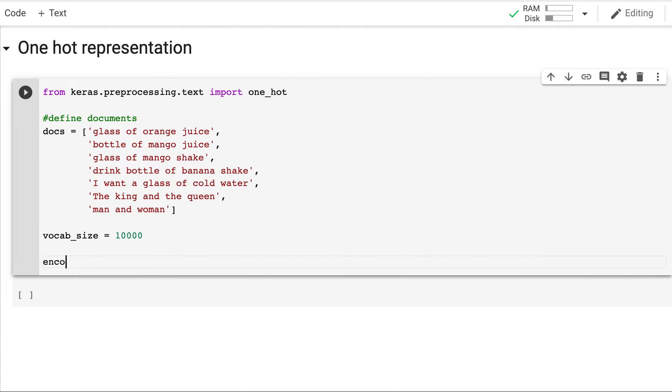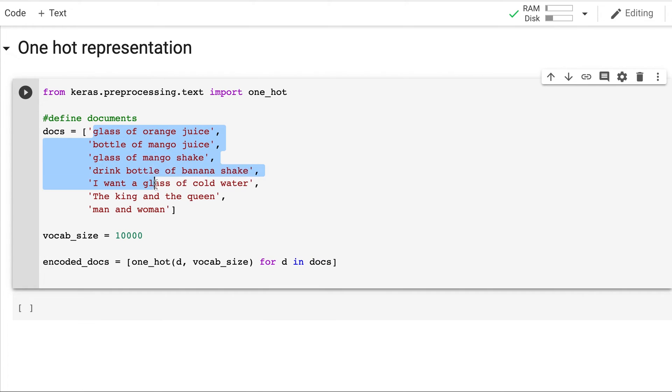So now we will calculate the one hot. For each document, so here D will mean one phrase, this sentence, this sentence. So we will iterate for all the documents. And then we will pass the document and vocab size. And this will calculate the corresponding one hot representation.